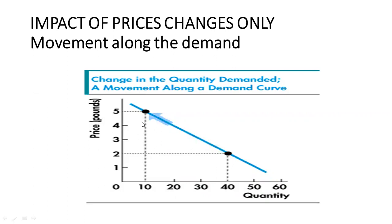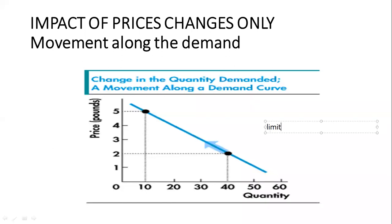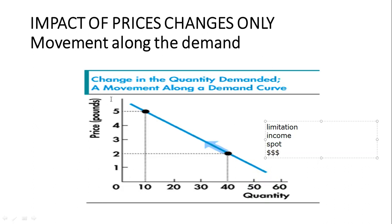If the price was set at two dollars and then it increases, the only thing that changed is the price. This is what we call a movement along the demand curve. When I was buying at two dollars, I bought 40 units, and when the price increased I bought fewer units. The main reason behind this limitation of demand is income — the limitation in the amount of money I have.